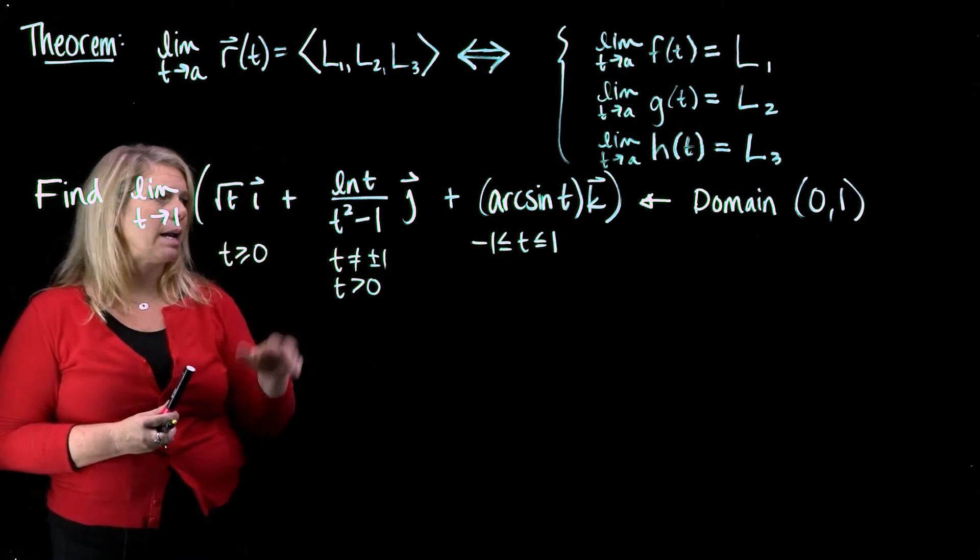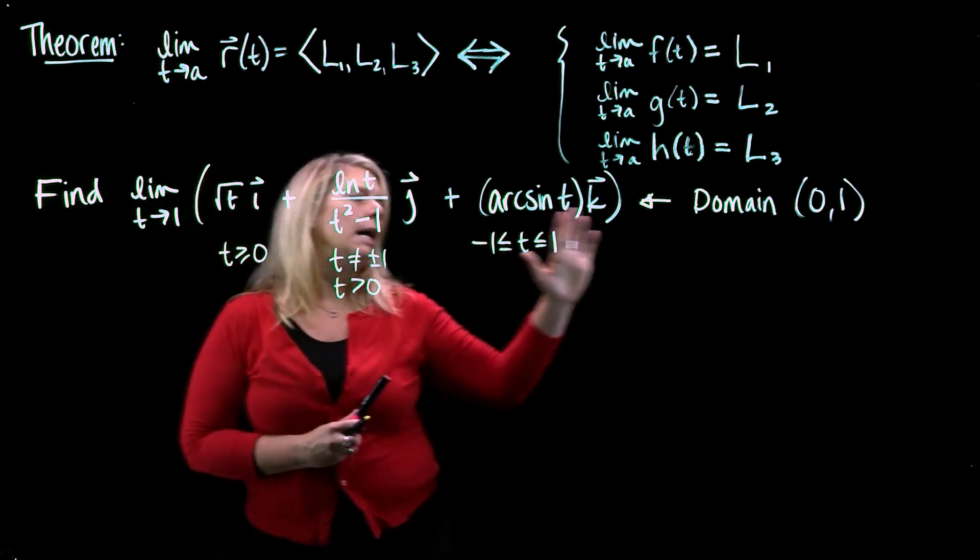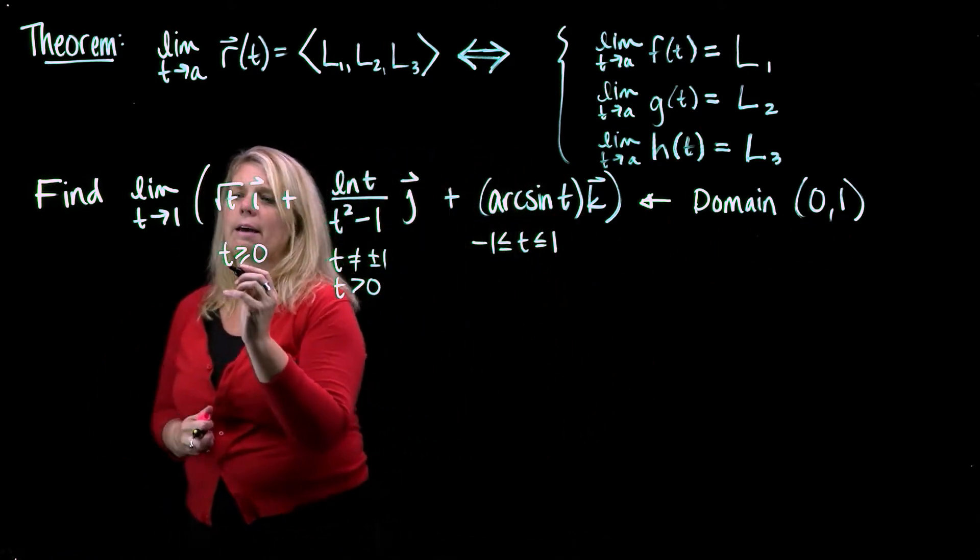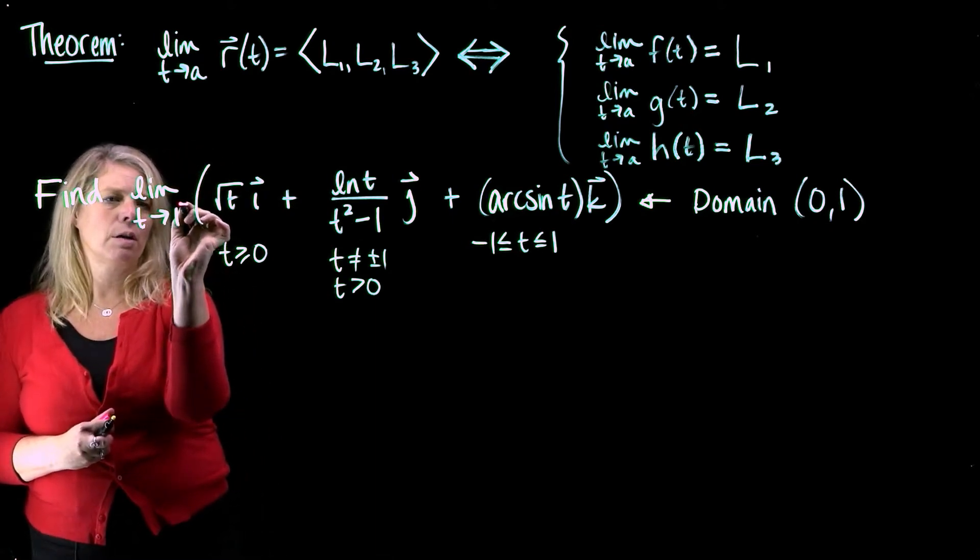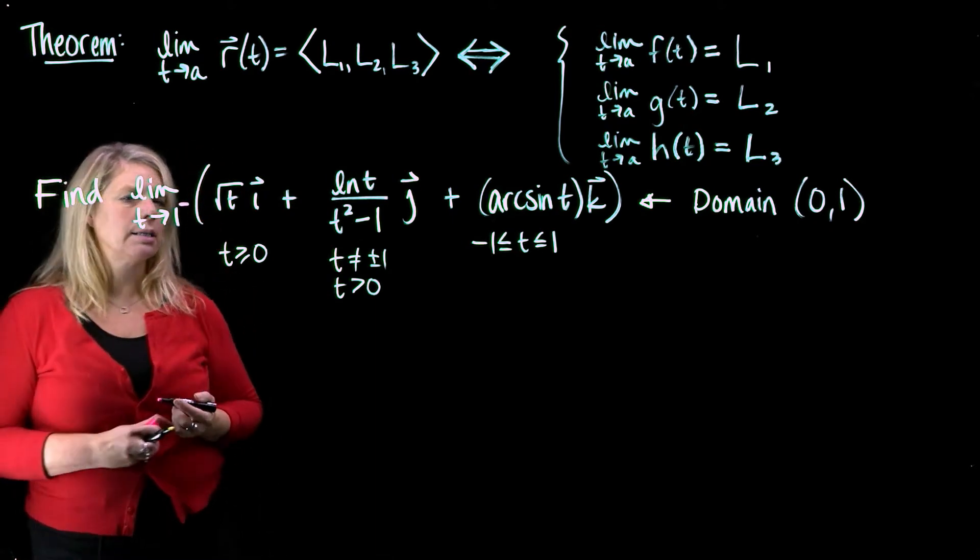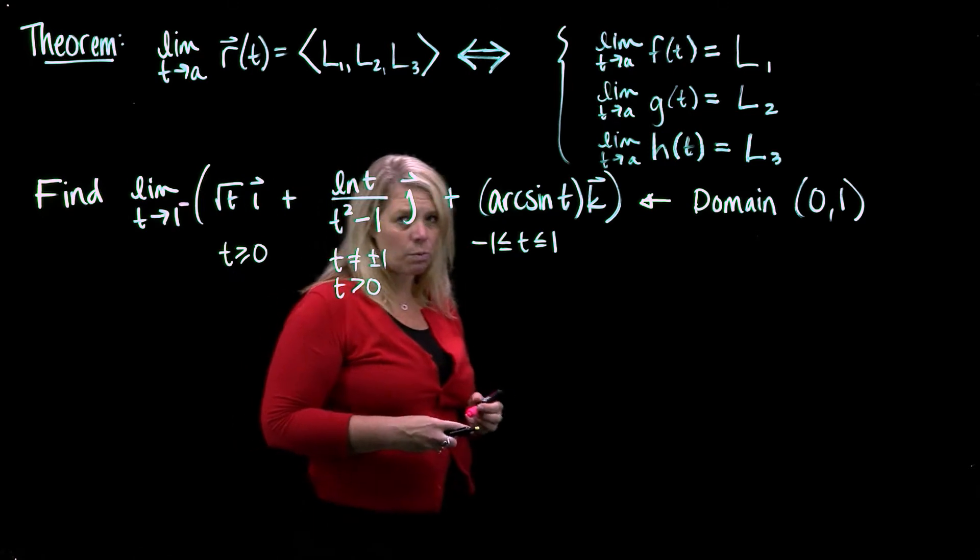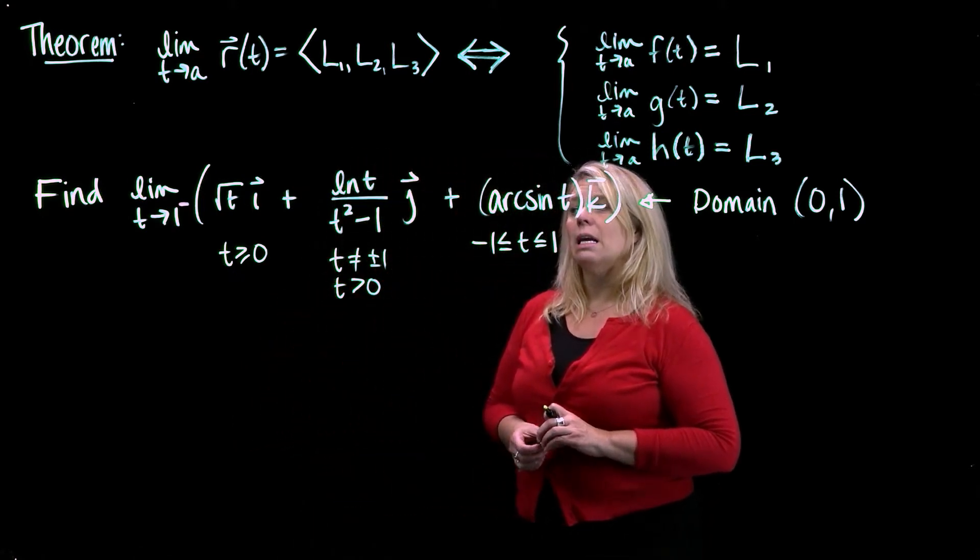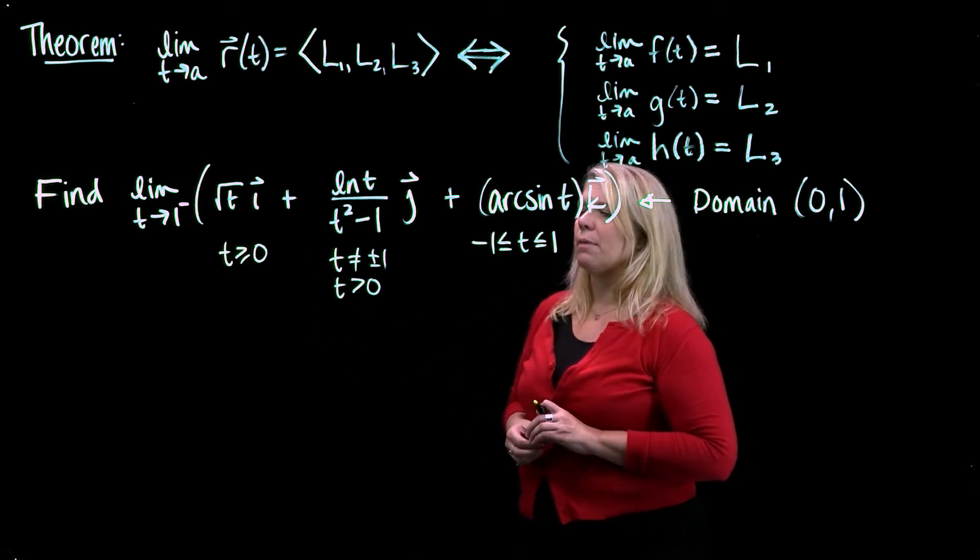So really, the only way we can answer this question is to think about a limit from the left. This function is only defined on the left side of t equals 1. So let's just consider, instead of the limit as t approaches 1, the limit as t approaches 1 from the left. So I put the minus sign up there to think about that.